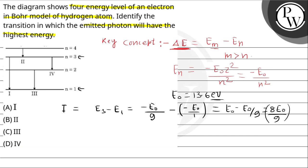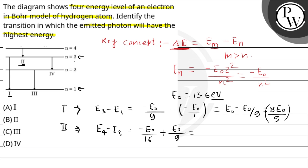For transition 2, which goes from 4 to 3: E4 minus E3 equals minus E-naught over 16 minus minus E-naught over 9, which equals E-naught over 9 minus E-naught over 16. This gives us 7E-naught over 144.